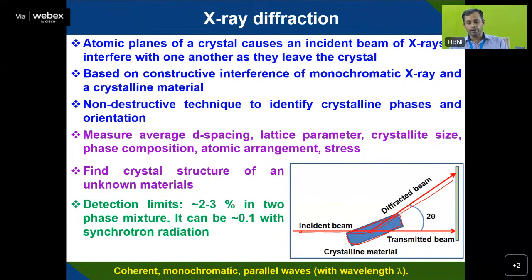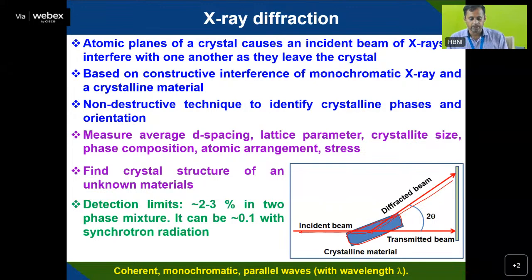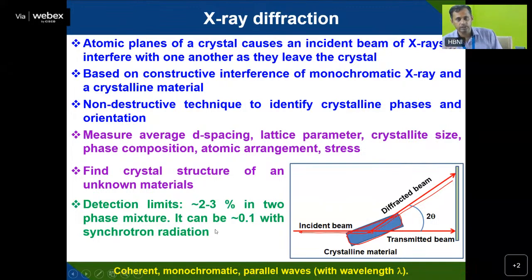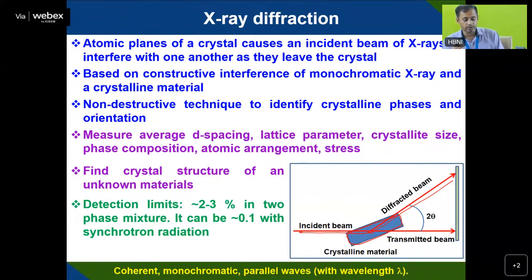XRD is a non-destructive technique to identify the crystalline phase. The material can be recovered and reused after X-ray analysis. It measures average D-spacing, lattice parameter, crystal size, phase composition, atomic arrangement, and strain or stress in the system. For unknown structures, you can also find the crystal structure. The detection limit is up to 2–3%. If using high-energy synchrotron radiation, the detection limit can go down to 0.1%.